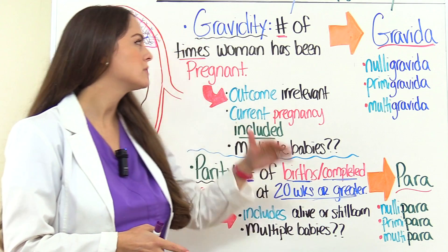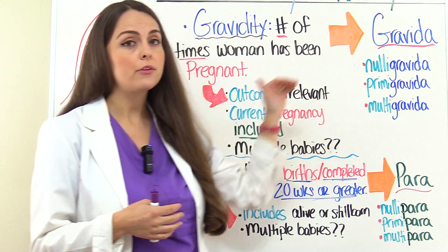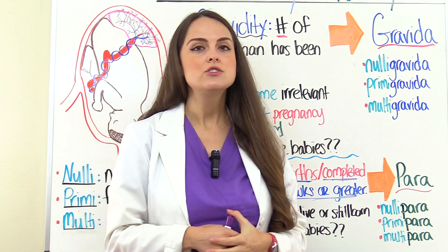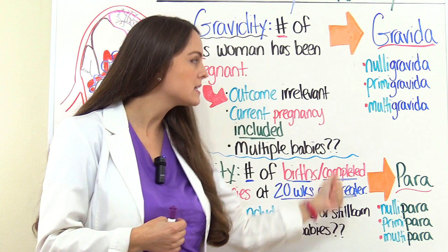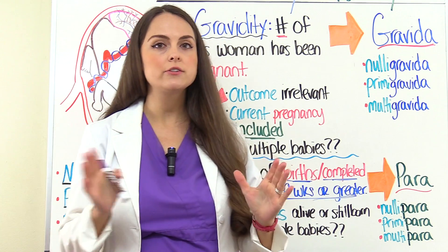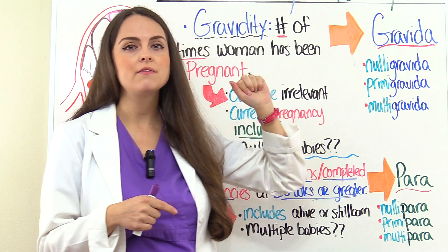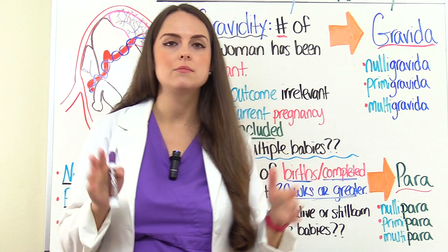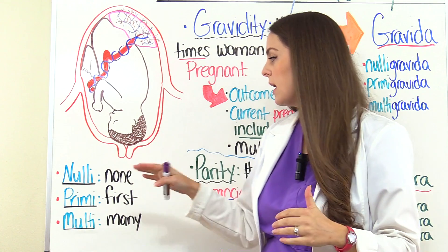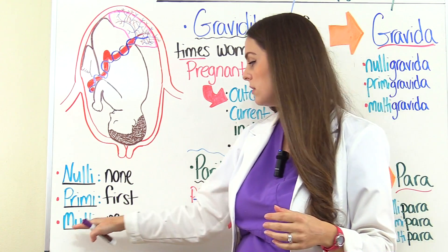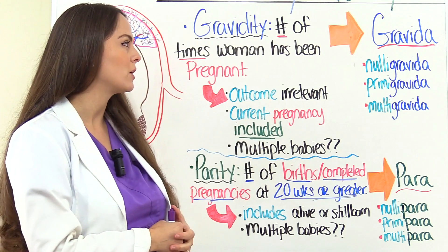Now let's look at the terms used to describe Gravidity and Parity. Another way of saying Gravidity is Gravida, and another way of saying Parity is Para. These terms look similar — they share the same prefix but their suffix is different. If you can understand what the prefix is and apply it to the definition of the suffix, it'll be really easy to solve these terms. So first let's review the prefixes: Nulli means none or never, Primi means first, and Multi means many, like multiple.